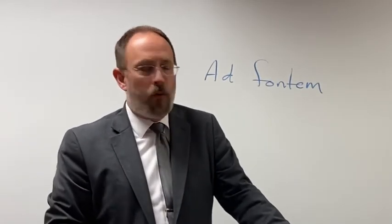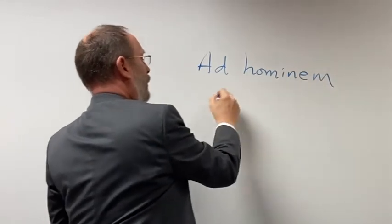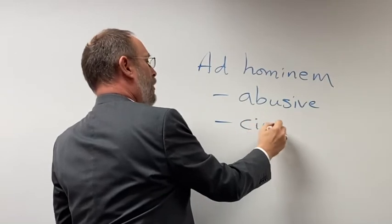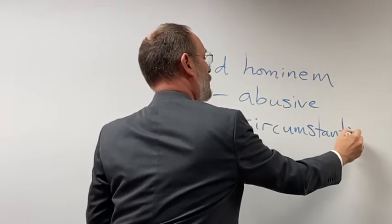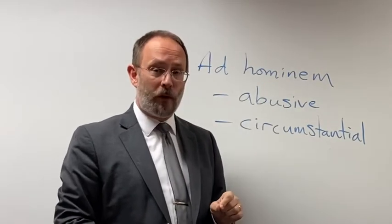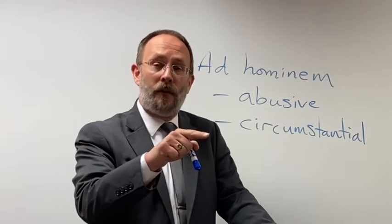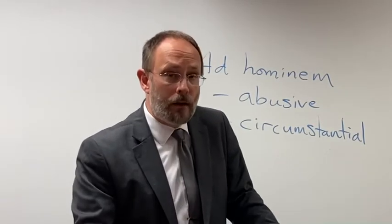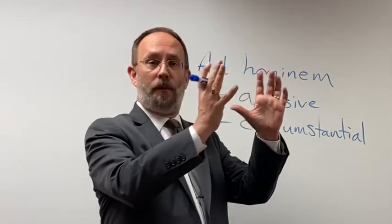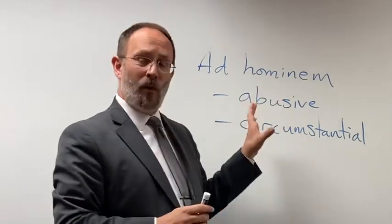Within the ad fontem fallacies, we have two types that share the same name: ad hominem abusive and ad hominem circumstantial. Ad hominem literally means 'to or against the person.' These are fallacies where someone is making an argument and then attacks another person — maybe by name calling, or by saying they're associated with a particular organization — to claim you can't believe them or that what they're saying is wrong.